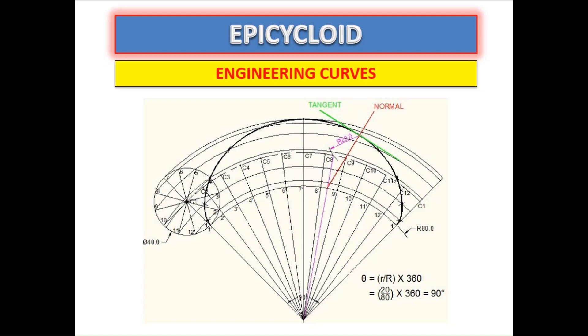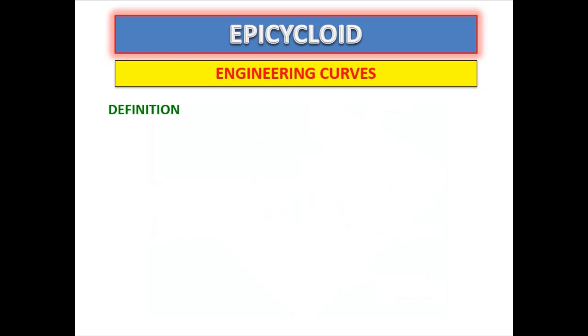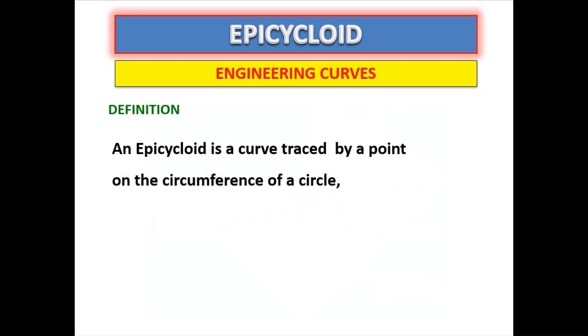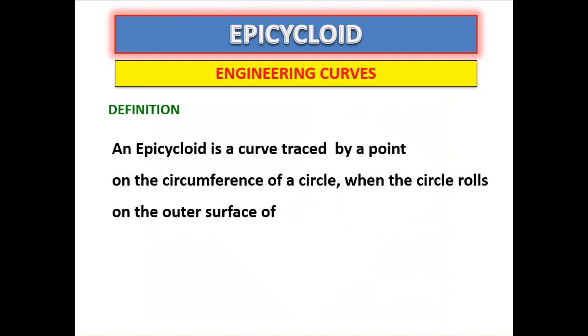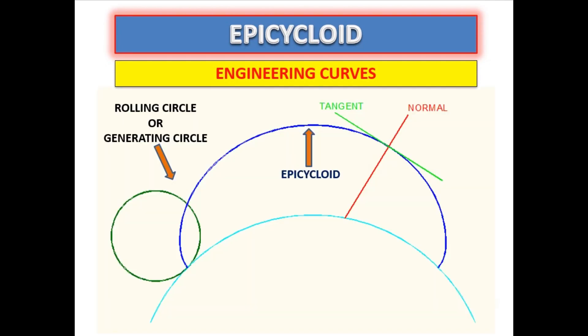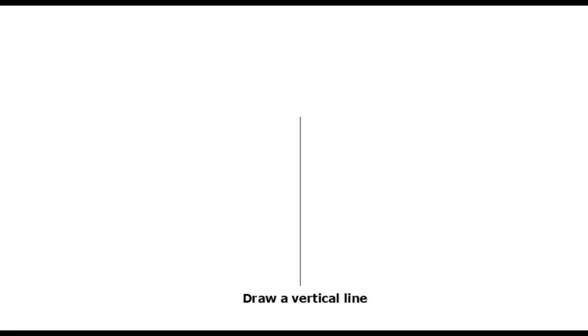This video explains the construction procedure of an epicycloid. An epicycloid is a curve traced by a point on the circumference of a circle when the circle rolls on the outer surface of another fixed circle. The moving circle is called the rolling circle or generating circle. The fixed circle is called the directing circle or base circle. Let us see the construction procedure of an epicycloid in detail.